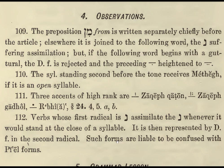Observations: The preposition Min, meaning 'from,' is written separately mainly before the article. Otherwise it is joined to the following word. The Nun is assimilated, giving a doubled consonant if possible. But if the following word begins with a guttural, then we can't have the Dagesh Forte, and the syllable weight increases — the E becomes a long E. The syllable standing second before the tone receives Meteg if it is an open syllable.